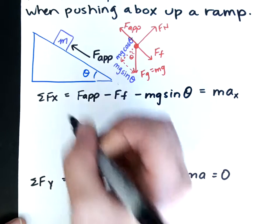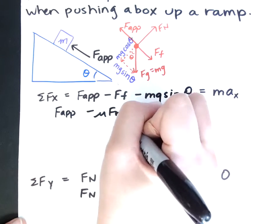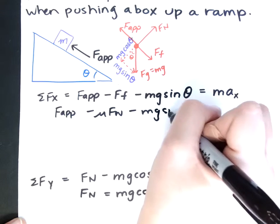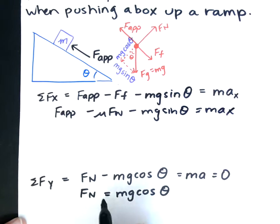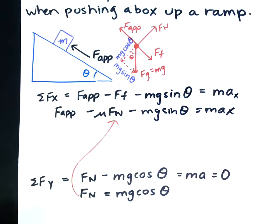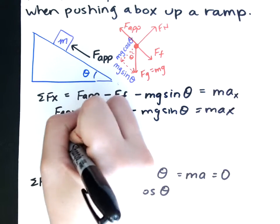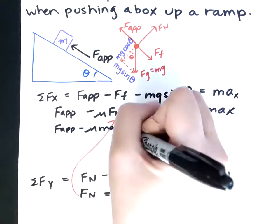F applied minus mu times Fn. And there's our Fn. We get F applied minus mu times mg cos theta.